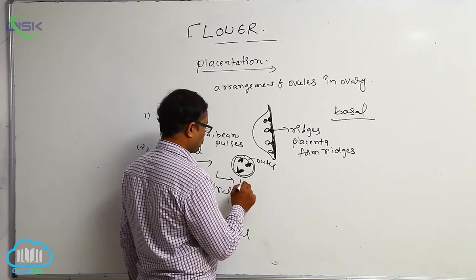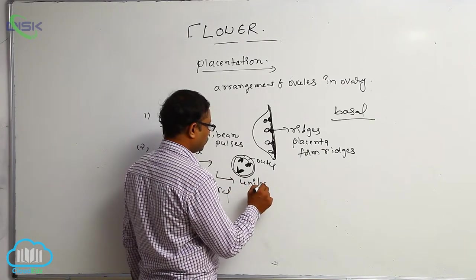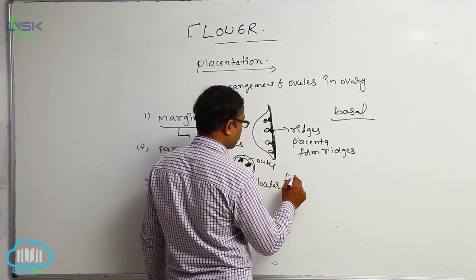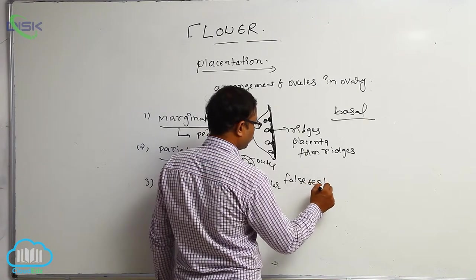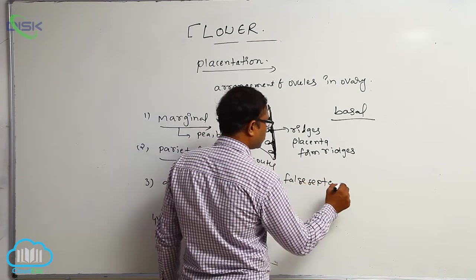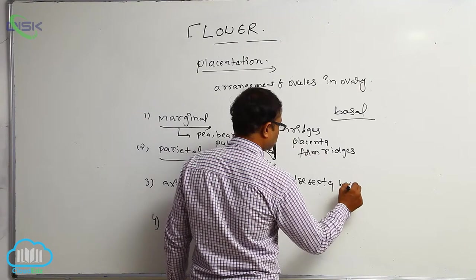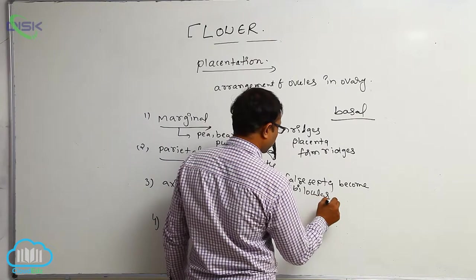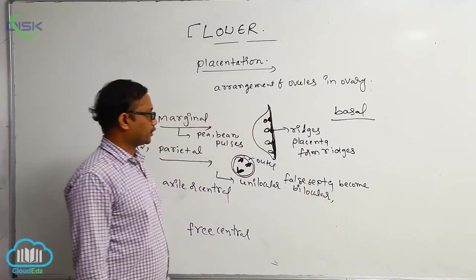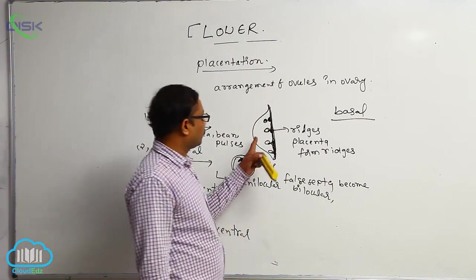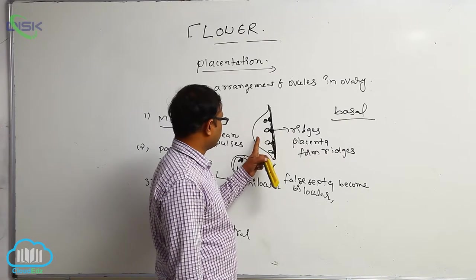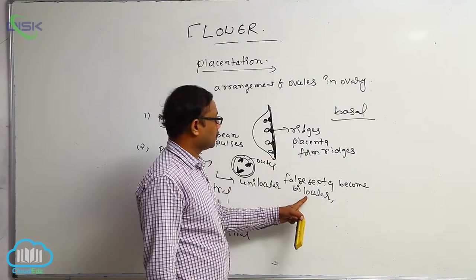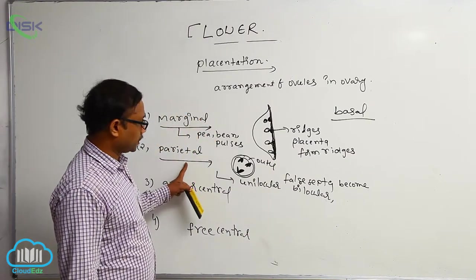Generally, parietal placentation occurs in a unilocular condition. By the formation of false septa, it can become bilocular. Locule means the cavity of the ovary — the inner cavity of the ovary is known as a locule.